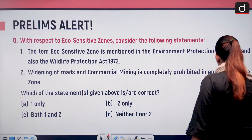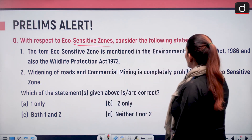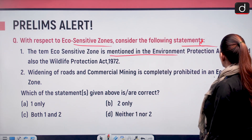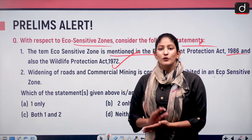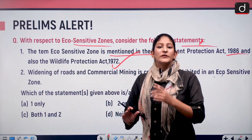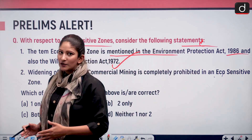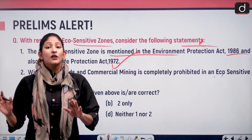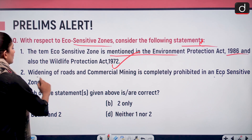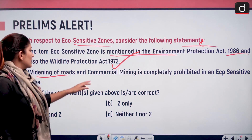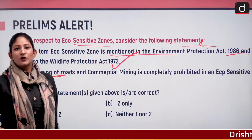Before we begin, I would like to answer the question I asked in the last segment, which was with respect to eco-sensitive zones. Consider the following statements: the term eco-sensitive zone is mentioned in the Environment Protection Act and also the Wildlife Protection Act. The first statement is downright incorrect — the term has not been used anywhere. The concept appears in certain rules and clauses of the Environmental Protection Act, but it is not mentioned as 'eco-sensitive zone' anywhere — not in the Wildlife Protection Act or the Environment Protection Act. Secondly, widening of roads and commercial mining is completely banned — widening of roads is regulated, but commercial mining is completely prohibited. That makes the second statement also incorrect.